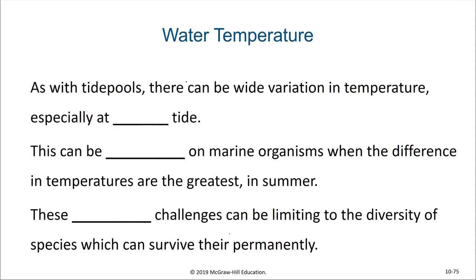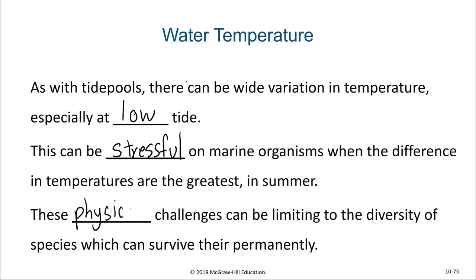Temperature is another factor that varies in estuaries. As with tide pools, there can be wide variation in temperature, especially at low tide. This can be stressful on marine organisms when the difference in temperatures is greatest, especially in summer. These physical challenges can be limiting to the diversity of species which can survive there permanently.